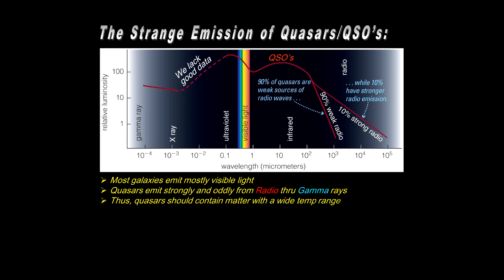So quasars should contain matter that has a wide range of temperatures to produce this wide variation in emission wavelengths. Now, they're very hard to study because they're so distant. However, there are similar active galactic nuclei galaxies closer to home, which we'll investigate momentarily.